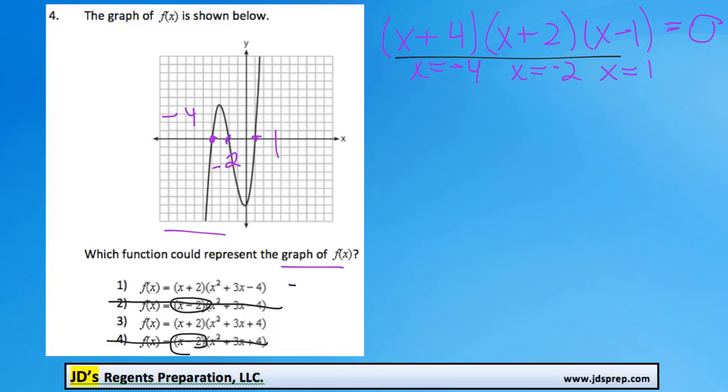Now, to see which one of these is correct, we actually need to factor x squared plus 3x minus 4, as well as the other one, which is x squared plus 3x plus 4. And ideally, we'll find out the two missing components that we're looking for here.